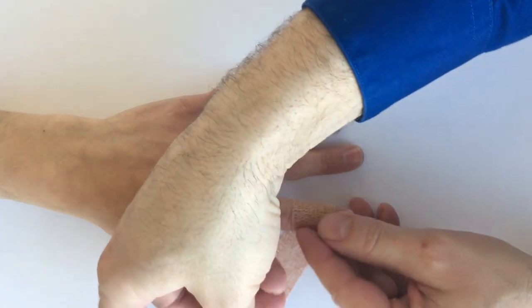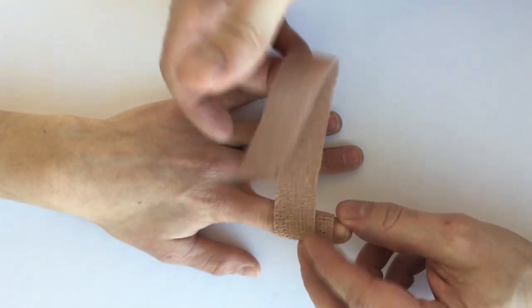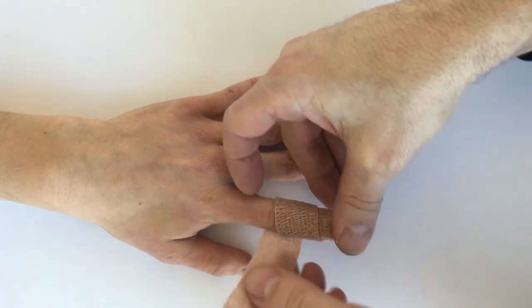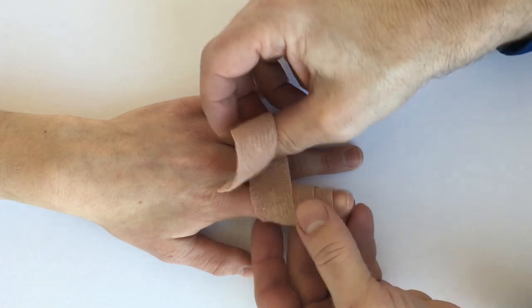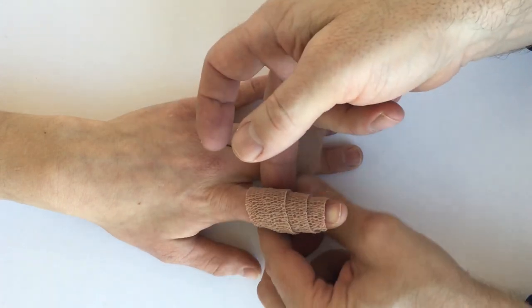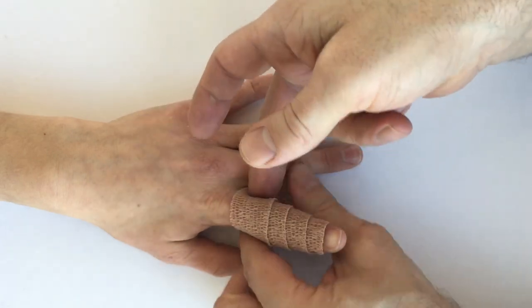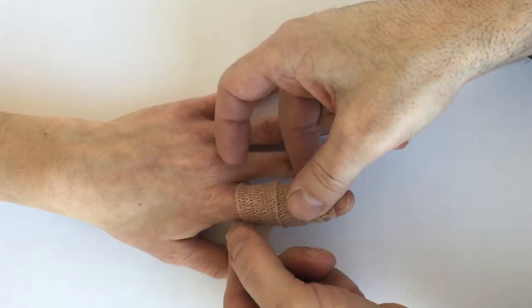When you wrap the Coban, just lay it on there without any stretch. The Coban will tighten up on its own once it's been on there, and you just keep going around overlapping by half each time until you have the whole finger wrapped.